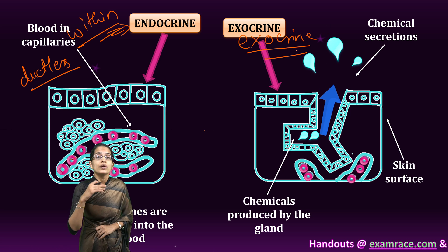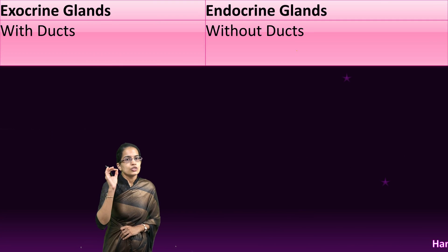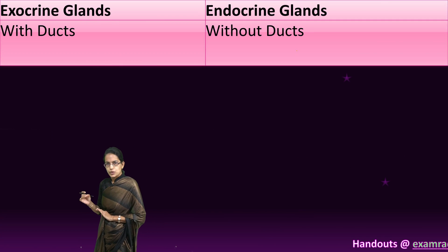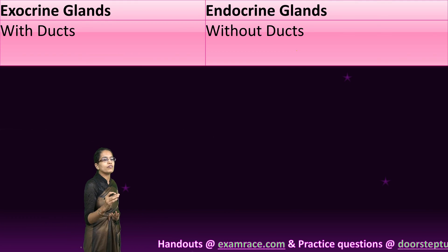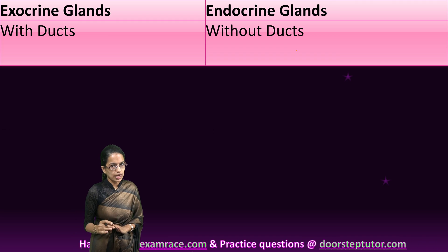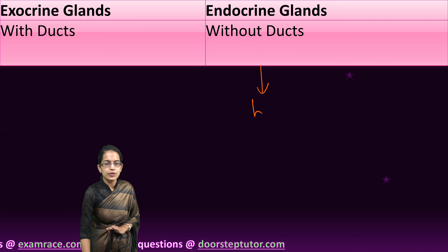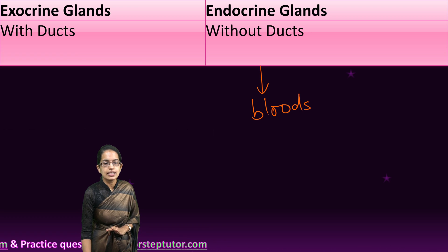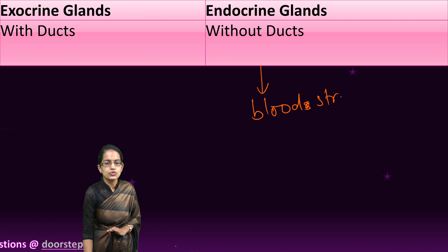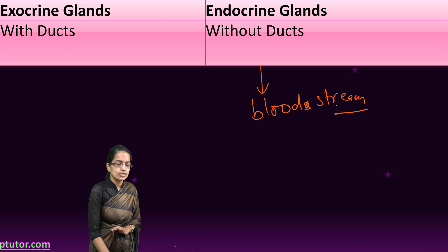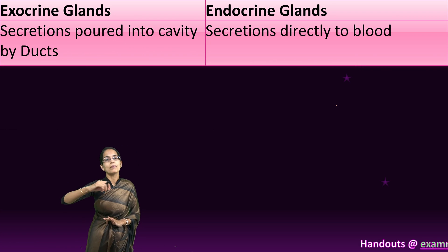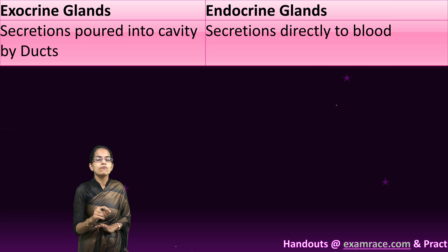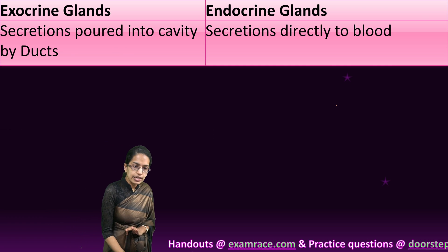This is the basic difference between exocrine versus endocrine glands. Let's move on to each difference in detail. Endocrine glands are ductless, however exocrine glands have ducts. That means the secretions of an endocrine gland are released directly into the bloodstream, whereas exocrine gland secretions are poured into a cavity by certain ducts.